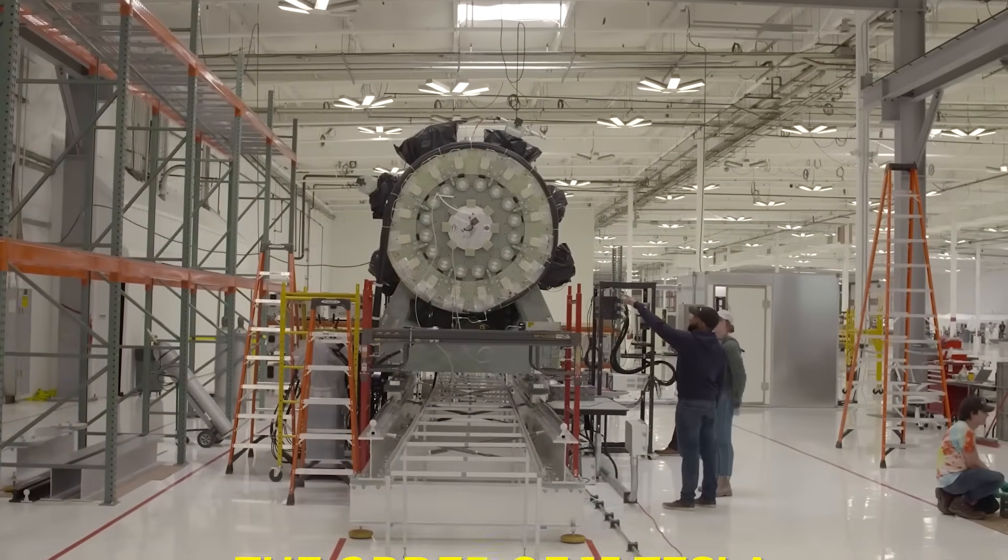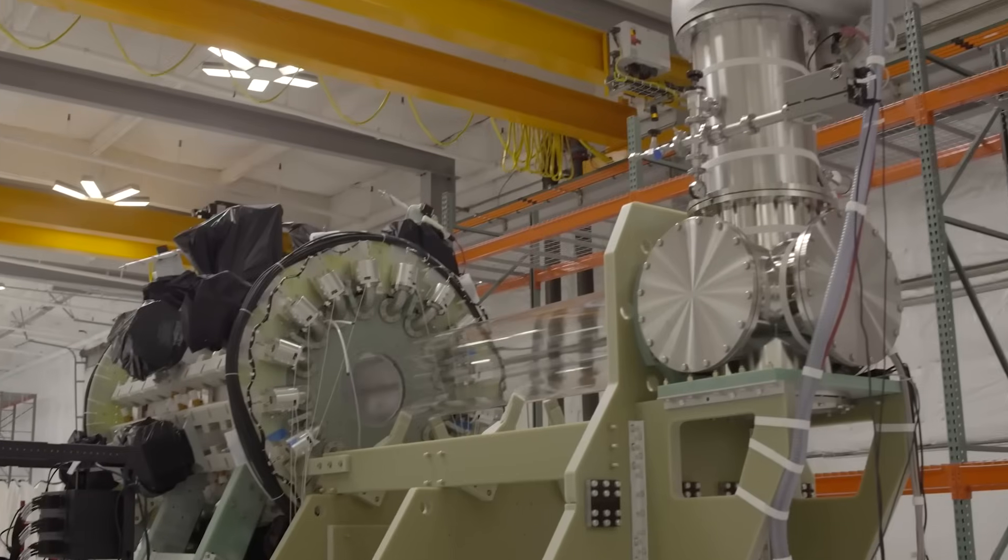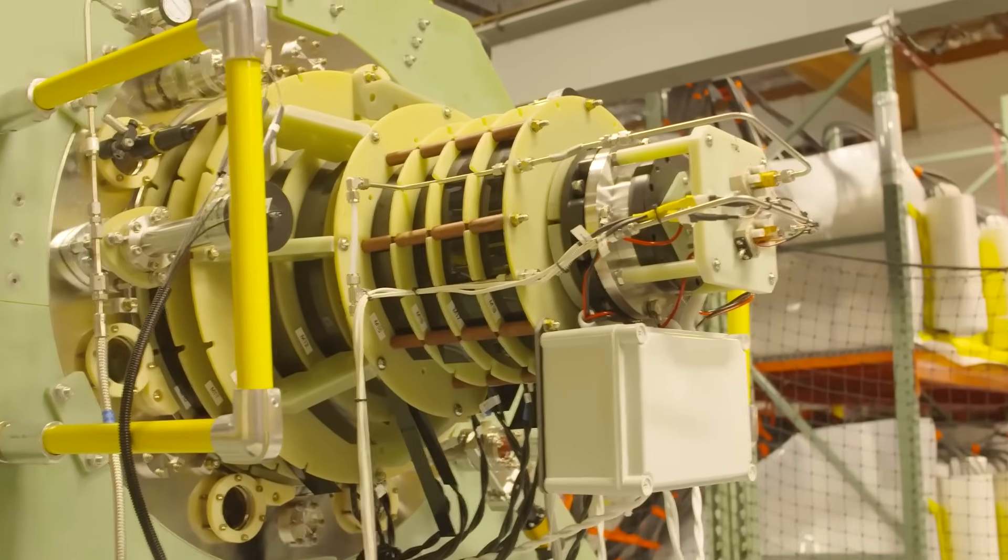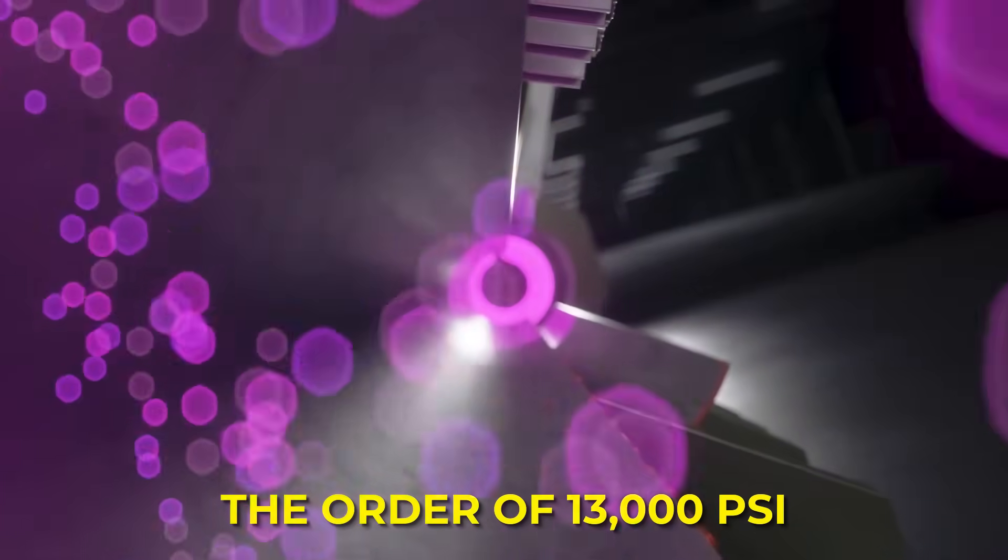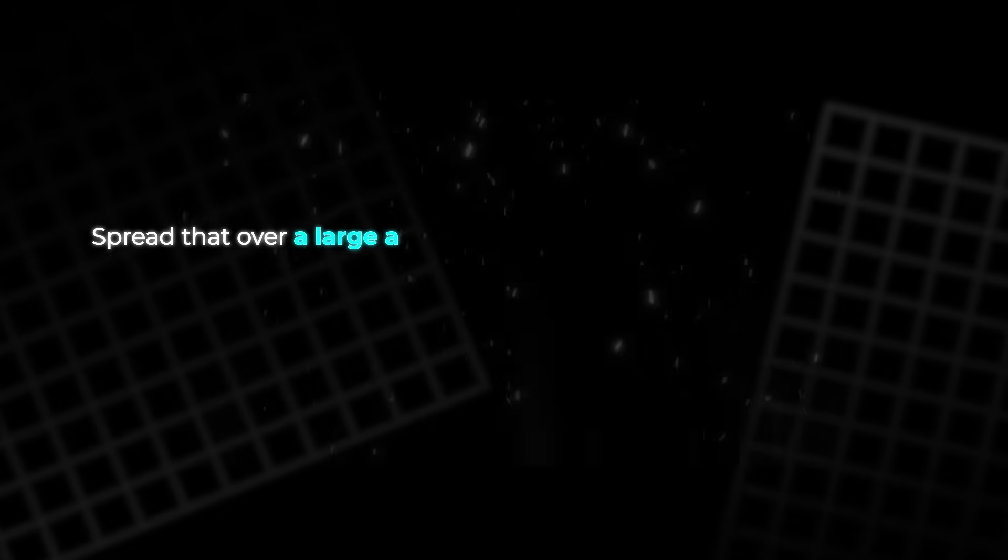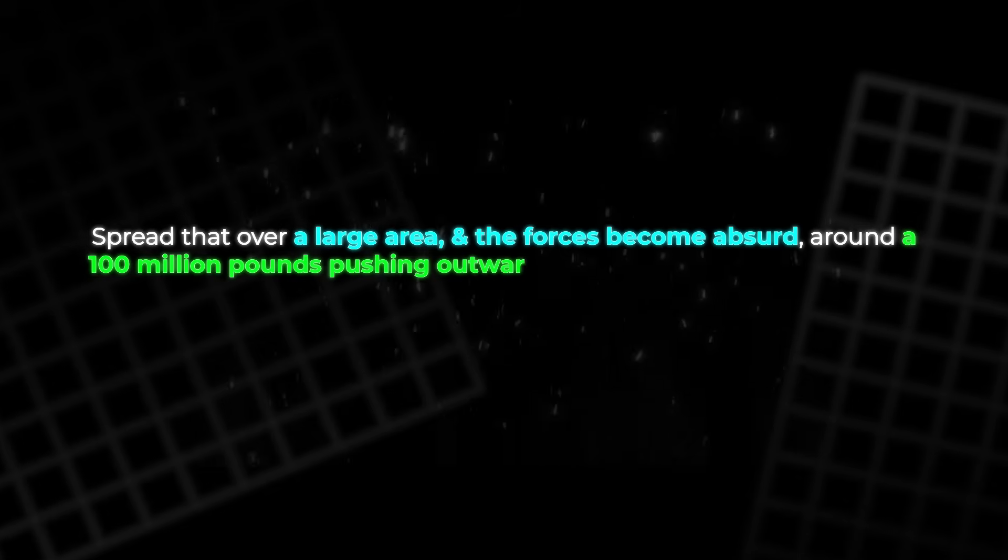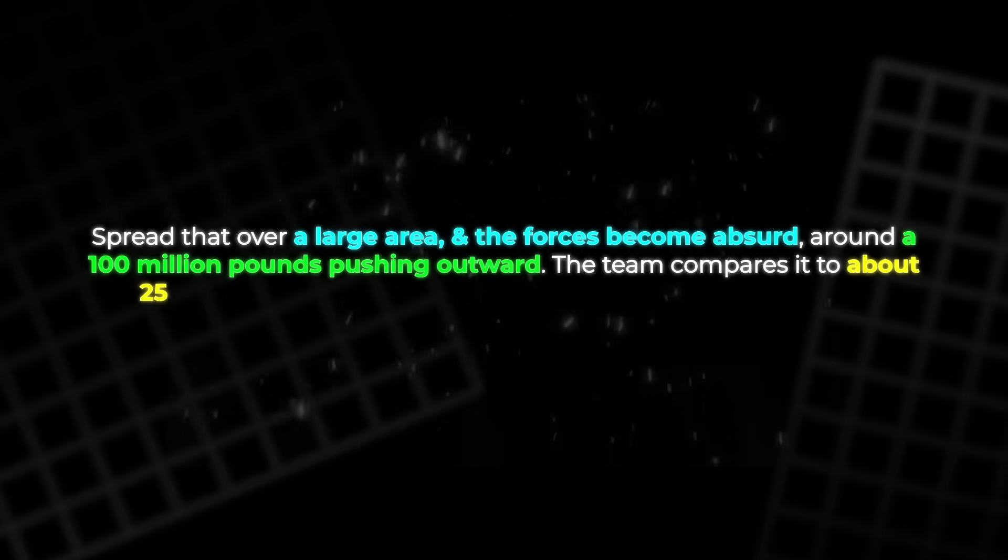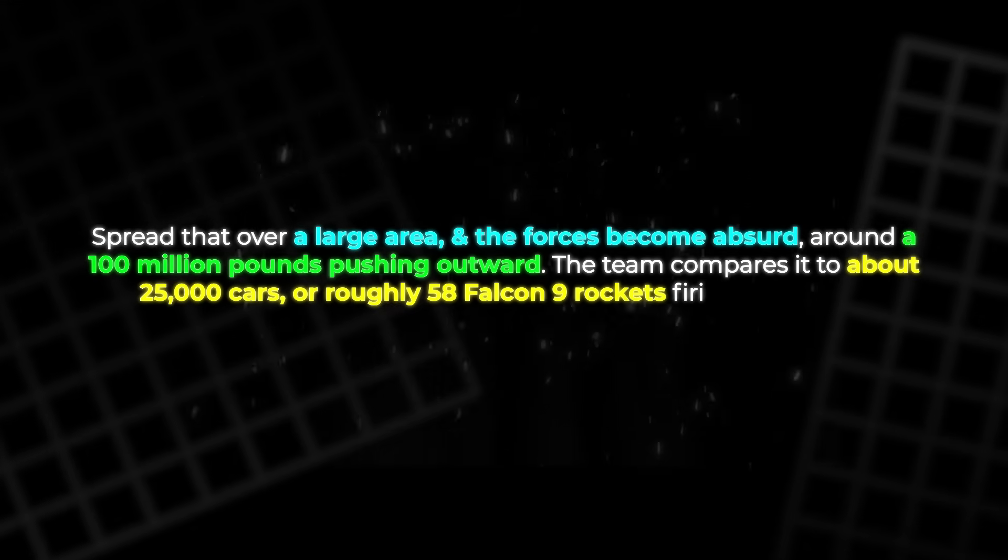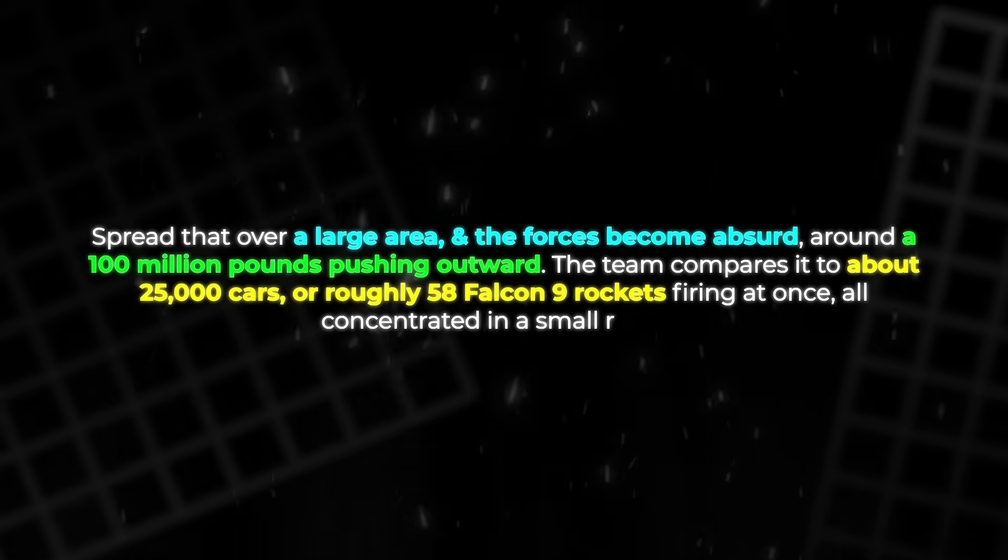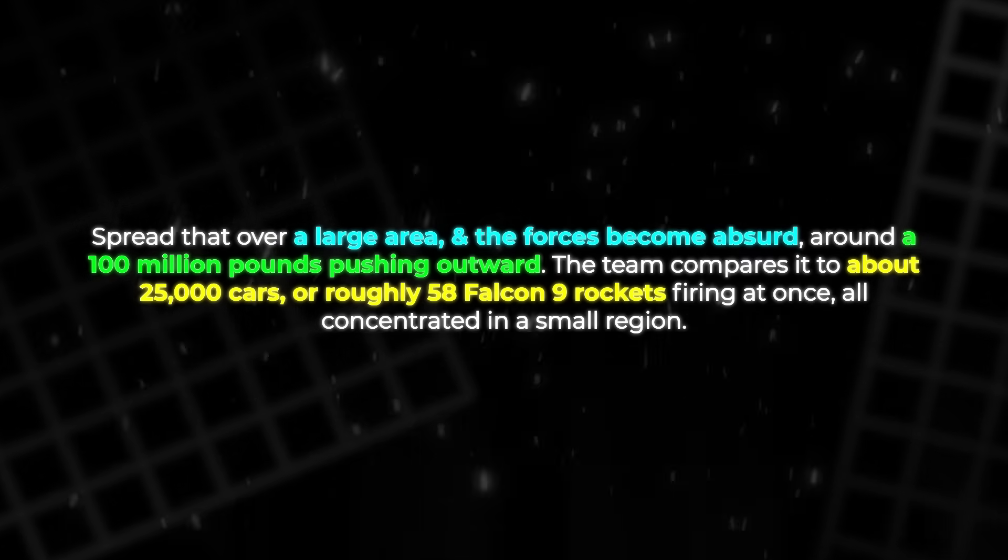The target fields are on the order of 15 Tesla, and that demands millions of amps per magnet. Those amps create magnetic pressure on the coil, with an average pressure on the order of 13,000 psi. Spread that over a large area, and the forces become absurd, around 100 million pounds pushing outward. The team compares it to about 25,000 cars, or roughly 58 Falcon 9 rockets firing at once, all concentrated in a small region.